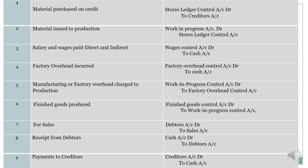The third transaction is salary and wages paid — the entry is debit wages to cash account. The fourth transaction is factory overheads incurred. For factory overhead related expenses, factory overhead control account is debited and cash account is credited.